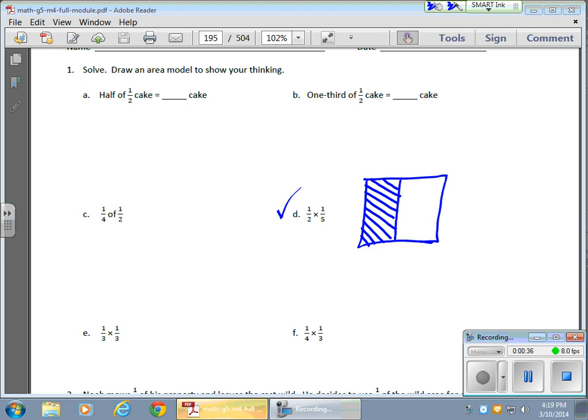We're taking half a group of a fifth, or 1 fifth of a group of a half. In this case, I'm going to take 1 fifth of a group of a half. So here's my 1 half, now I need to turn this, or break this into fifths.